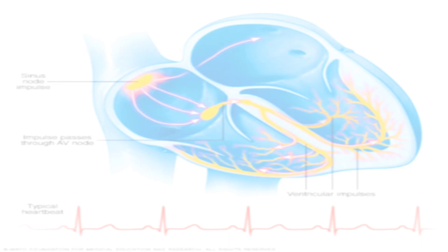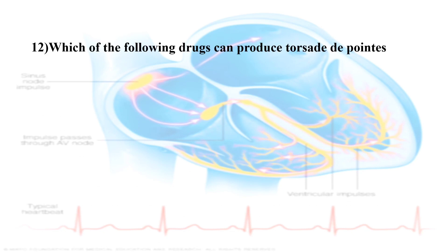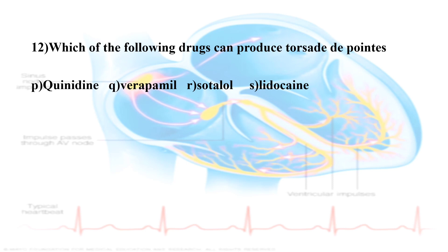Twelfth question: Which of the following drugs can produce torsades de pointes? The options are: Quinidine, Verapamil, Sotalol, and Lidocaine. Torsades de pointes is caused by QT interval prolongation. The correct answers are Quinidine and Sotalol, as both prolong the QT interval and can cause torsades de pointes.